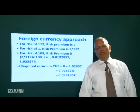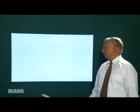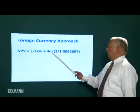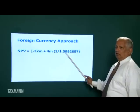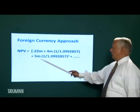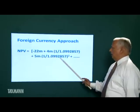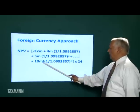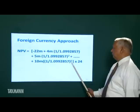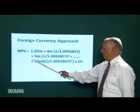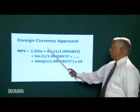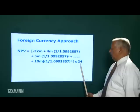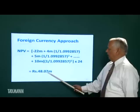Under the foreign currency approach, we shall discount all cash flows at 9.92857%. The 22 million outflow in the zero period and each year's inflow are discounted at the required rate of return in CHF. This gives the NPV in foreign currency. Multiplying by the foreign exchange rate at the zero period gives the NPV in rupees.